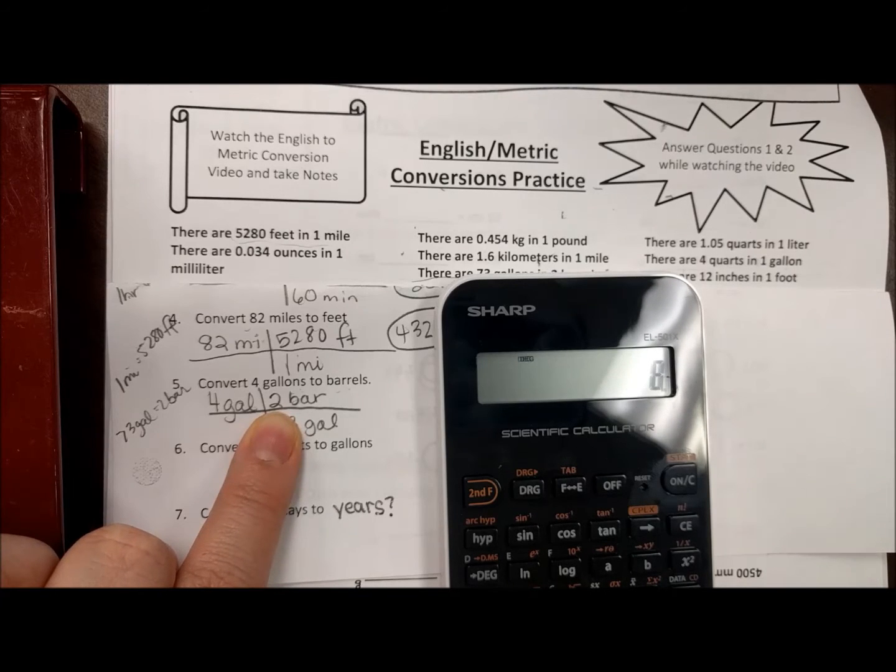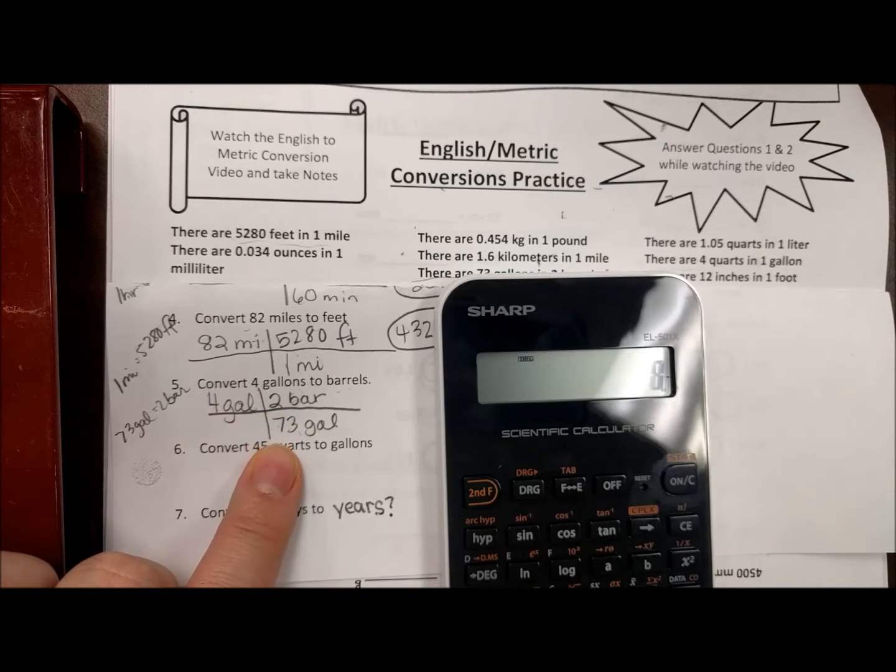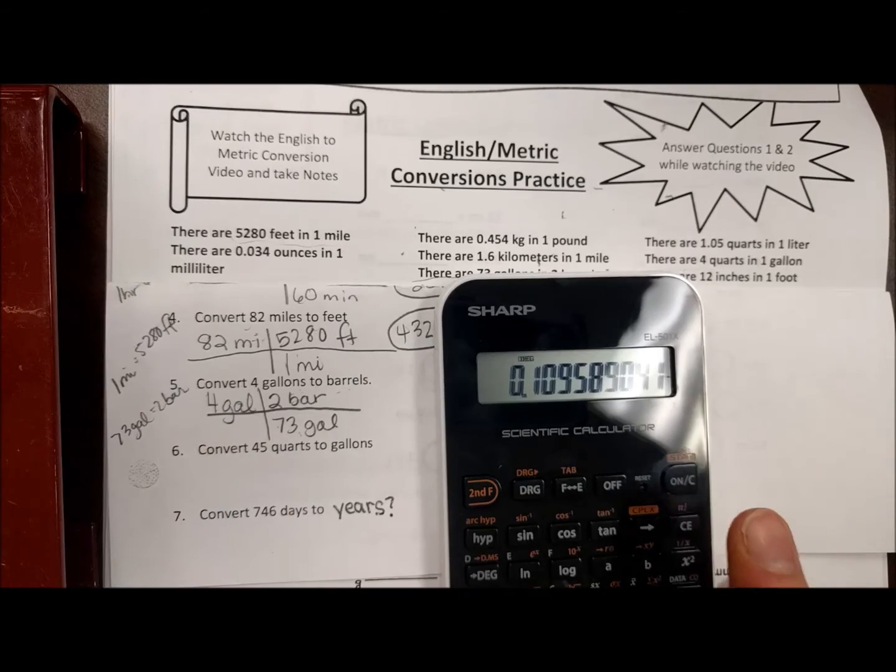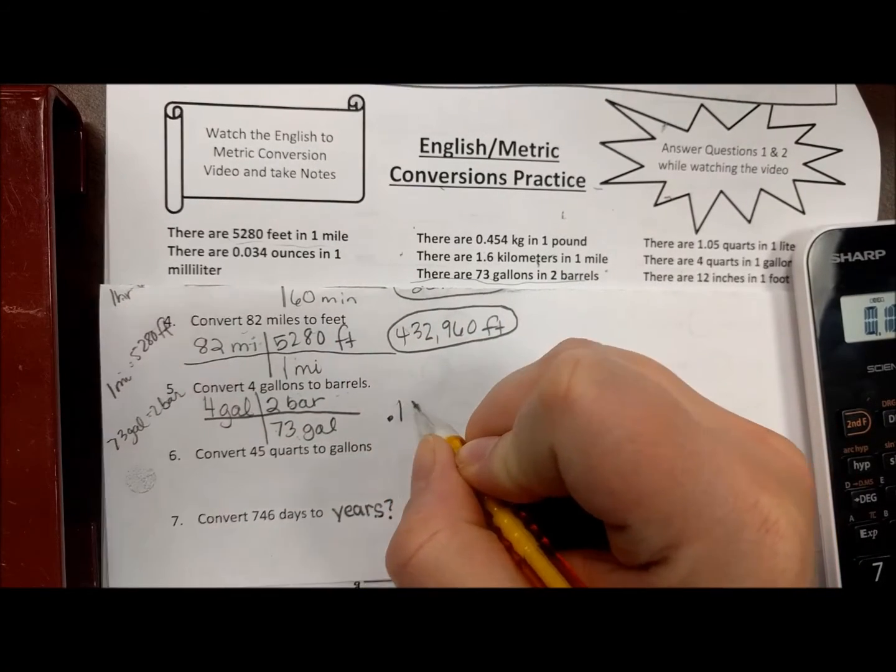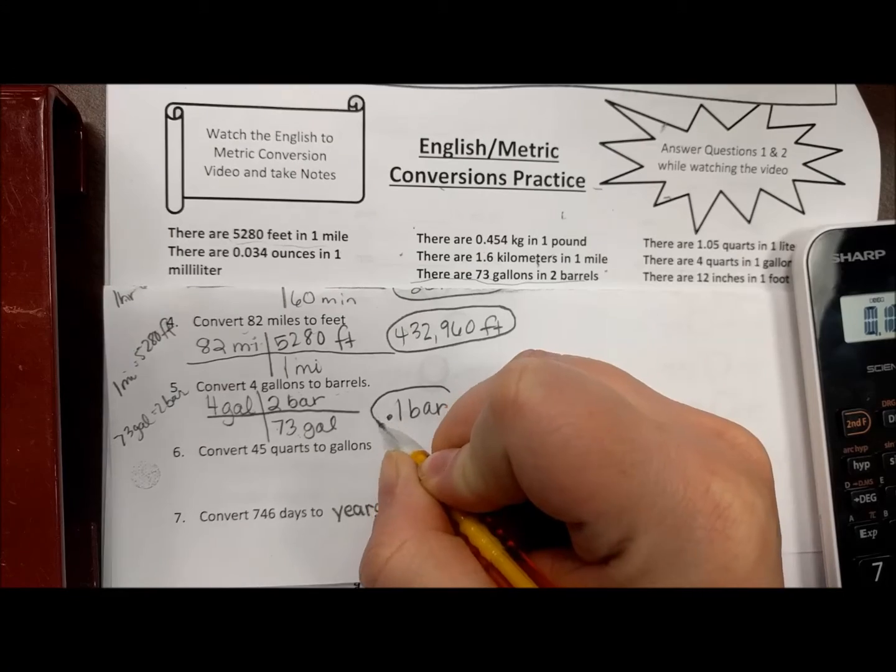So you have about 0.1 barrels. You guys can round to the easiest thing to round by on this one.